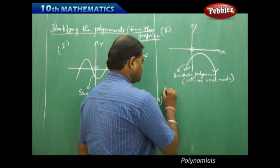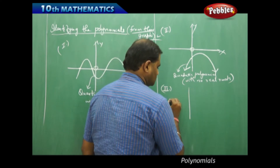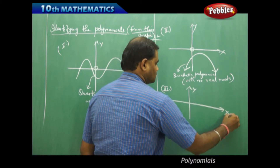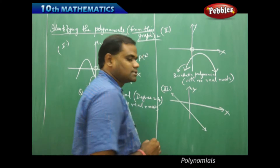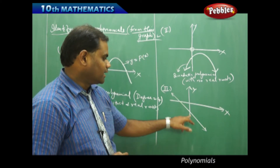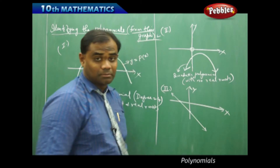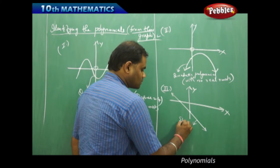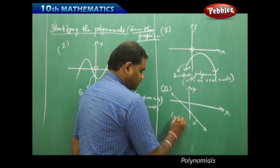Similarly, this is a straight line with one x-intercept and one y-intercept. Because it has only one x-intercept, this is a linear polynomial, or a straight line.